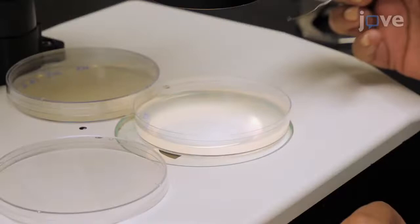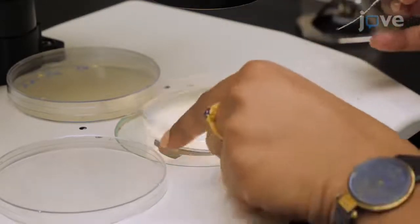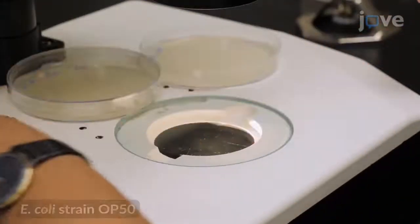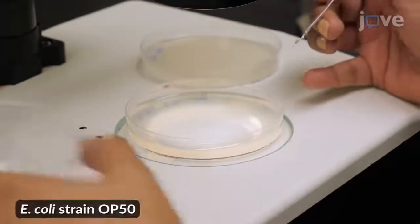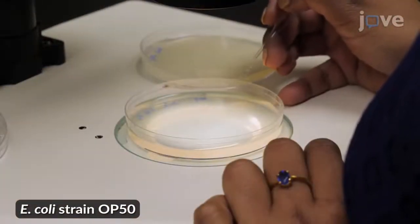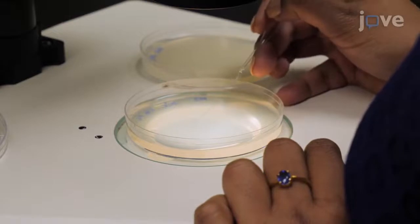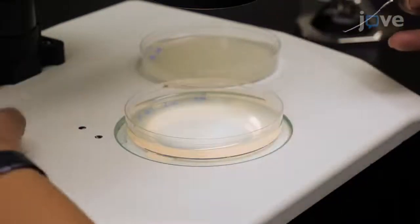To begin, transfer L4 larvae of desired genetic backgrounds onto a freshly seeded lawn of Escherichia coli on nematode growth media or NGM plates. Use at least two 100 millimeter or three 60 millimeter plates for each strain.